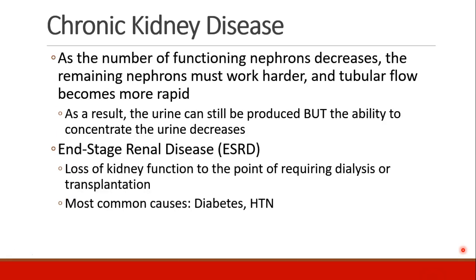As the number of remaining functioning nephrons decreases, the remaining nephrons have to work harder. As that happens, renal tubular flow becomes more rapid. And as flow becomes more rapid through the renal tubule, you can still produce urine, but it's very hard to concentrate it sufficiently — so we start getting more dilute urine. This eventually leads to end-stage renal disease, requiring dialysis or transplantation. The most common causes of end-stage renal disease in this country are diabetes and hypertension.